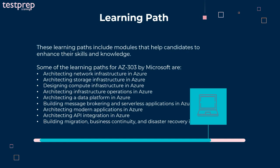These learning paths include modules that help candidates to enhance their skills and knowledge. Some of the learning paths for AZ-303 by Microsoft are: first, architecting network infrastructure in Azure; second, architecting storage infrastructure in Azure; third, designing compute infrastructure in Azure; fourth, architecting infrastructure operations in Azure; fifth, architecting a data platform in Azure.